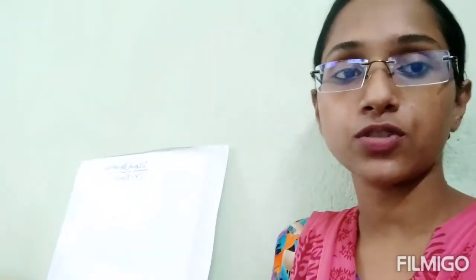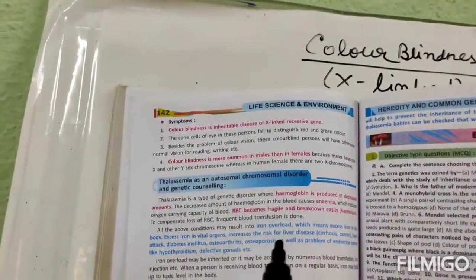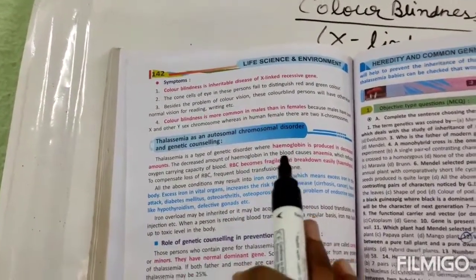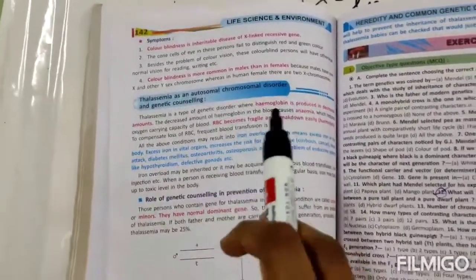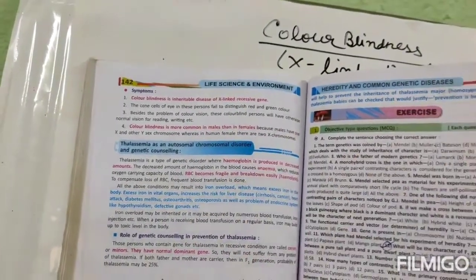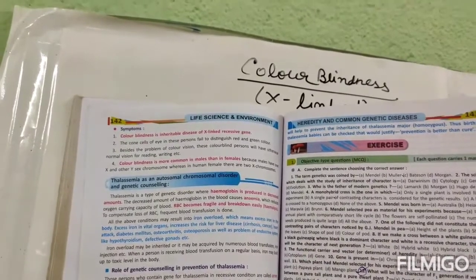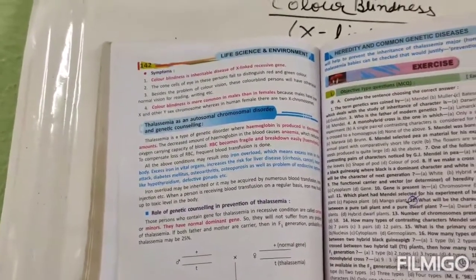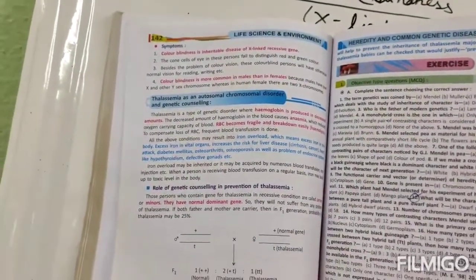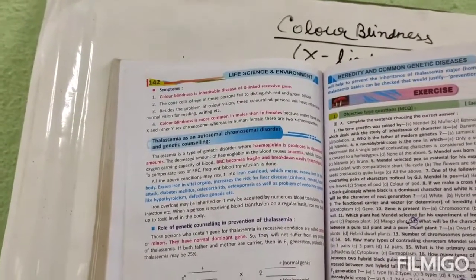Now we will look at the symptoms of color blindness. Color blindness is an X-linked recessive gene that is inherited. The cone cells of the eye in an affected person fail to distinguish red and green color. Besides the problem of color vision, a color blind person will have otherwise normal vision for reading and writing — they will not suffer any other vision-related problems, only they cannot identify red and green.